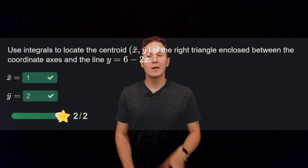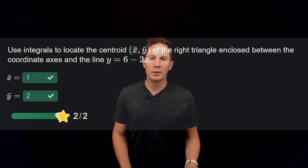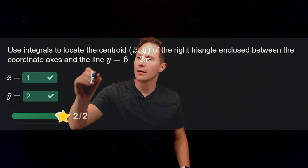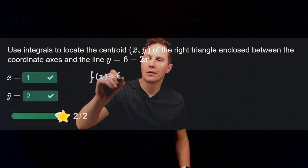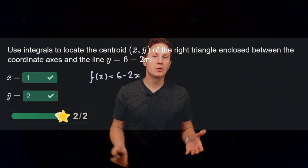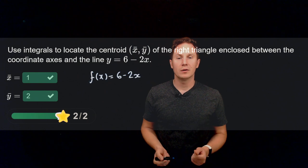Okay, I hope you paused it and have found these coordinates to be 1 and 2. So what we need to do is take the function f(x) equals 6 minus 2x and then establish the boundaries a and b for the integrals.